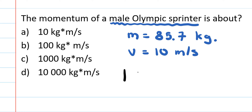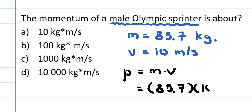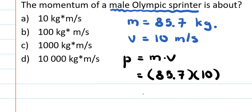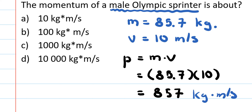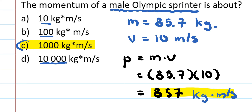Using momentum = mass × velocity, with mass = 85.7 kg and velocity = 10 m/s, we get approximately 857 kg·m/s. Looking at the options, option C is a close approximation, while the other numbers are off by quite a bit. So option C is a safe estimation for this calculation.